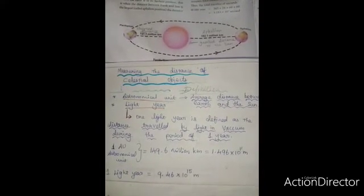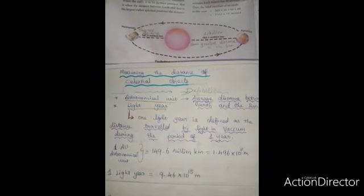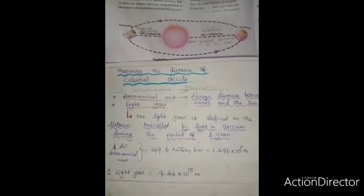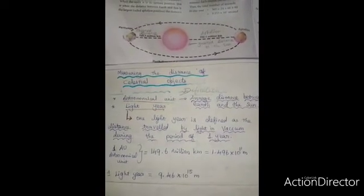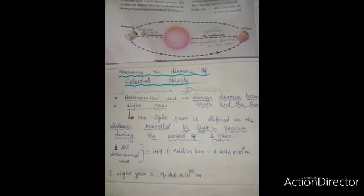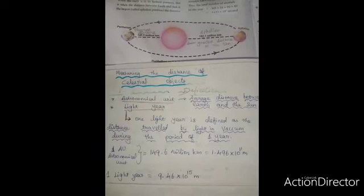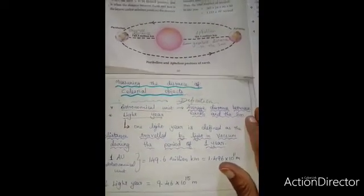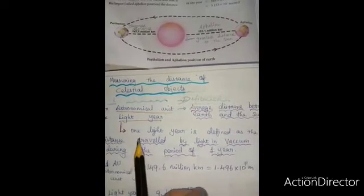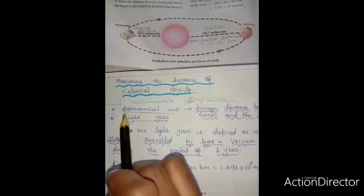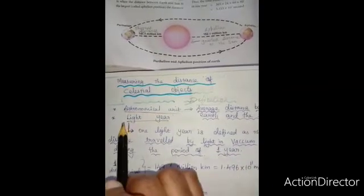Now, let us learn how to measure the distance between celestial objects. Celestial objects means objects which are in the space. To measure the distance between celestial objects, we have two types of measurement. Astronomical unit and light year.